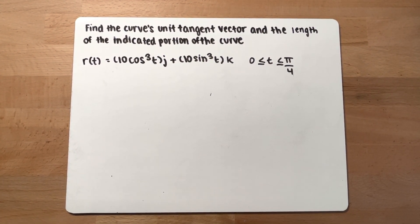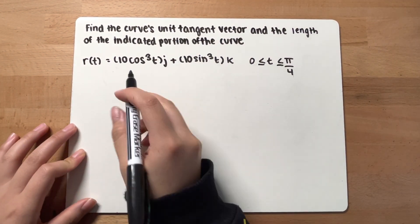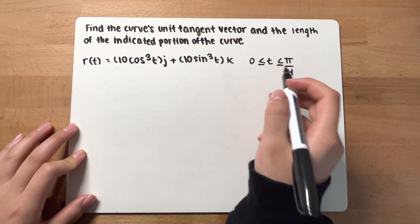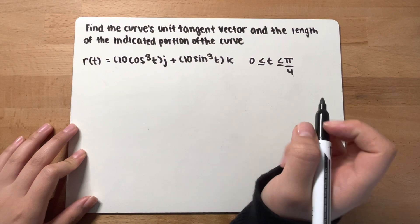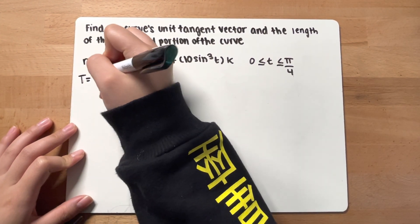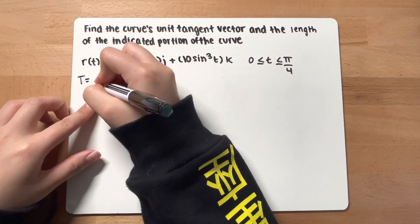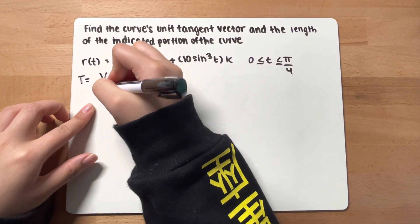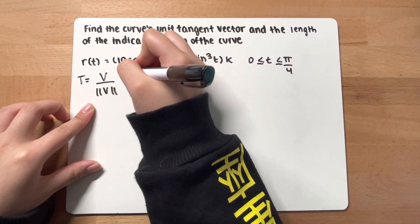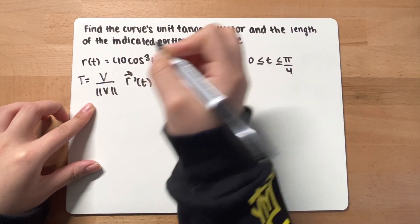Find the curve's unit tangent vector and the length of the indicated portion of the curve. We have a function and a specified portion. We'll begin by finding the unit tangent, which is equal to the velocity over the magnitude of the velocity. To find the velocity, you just find the derivative of the function.